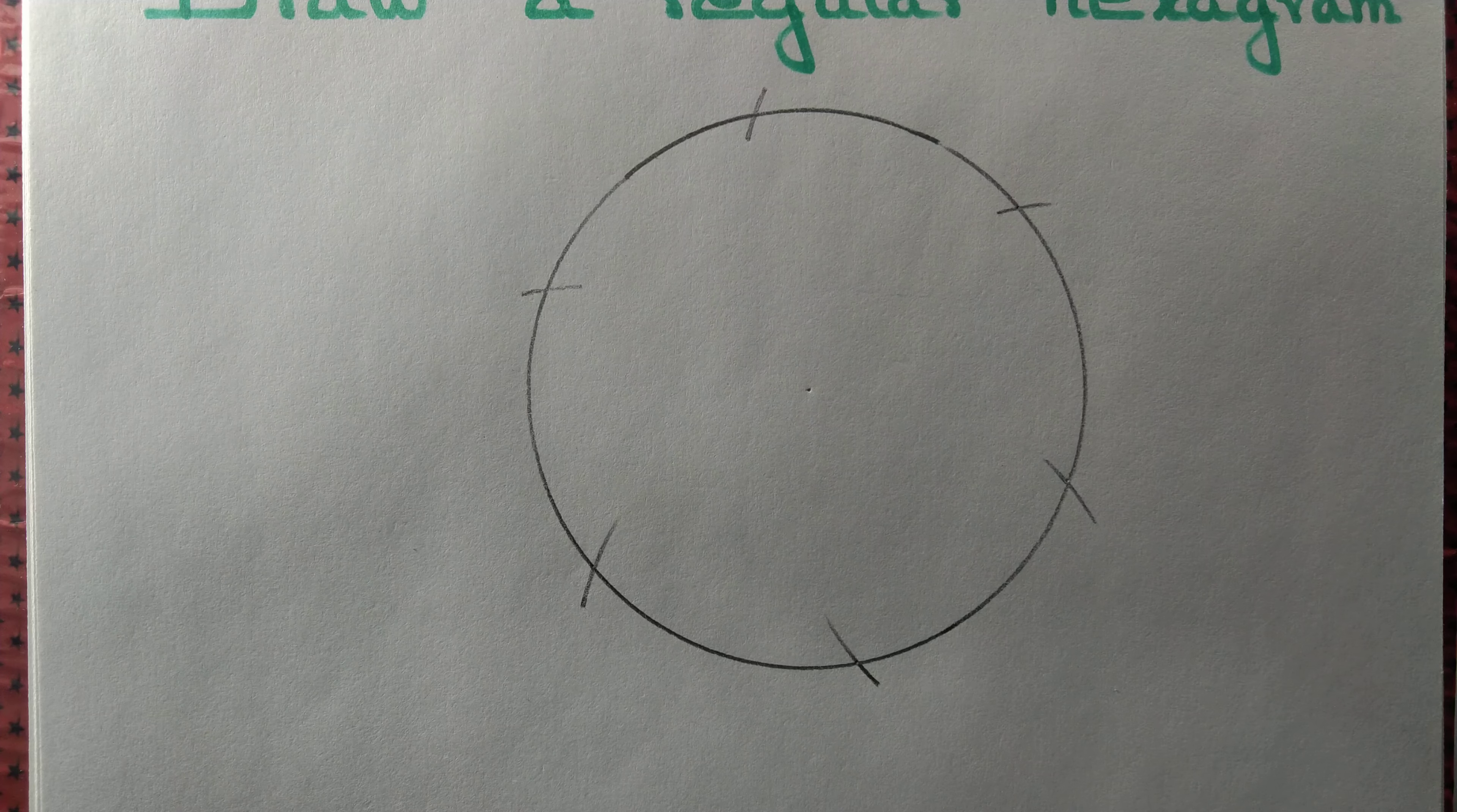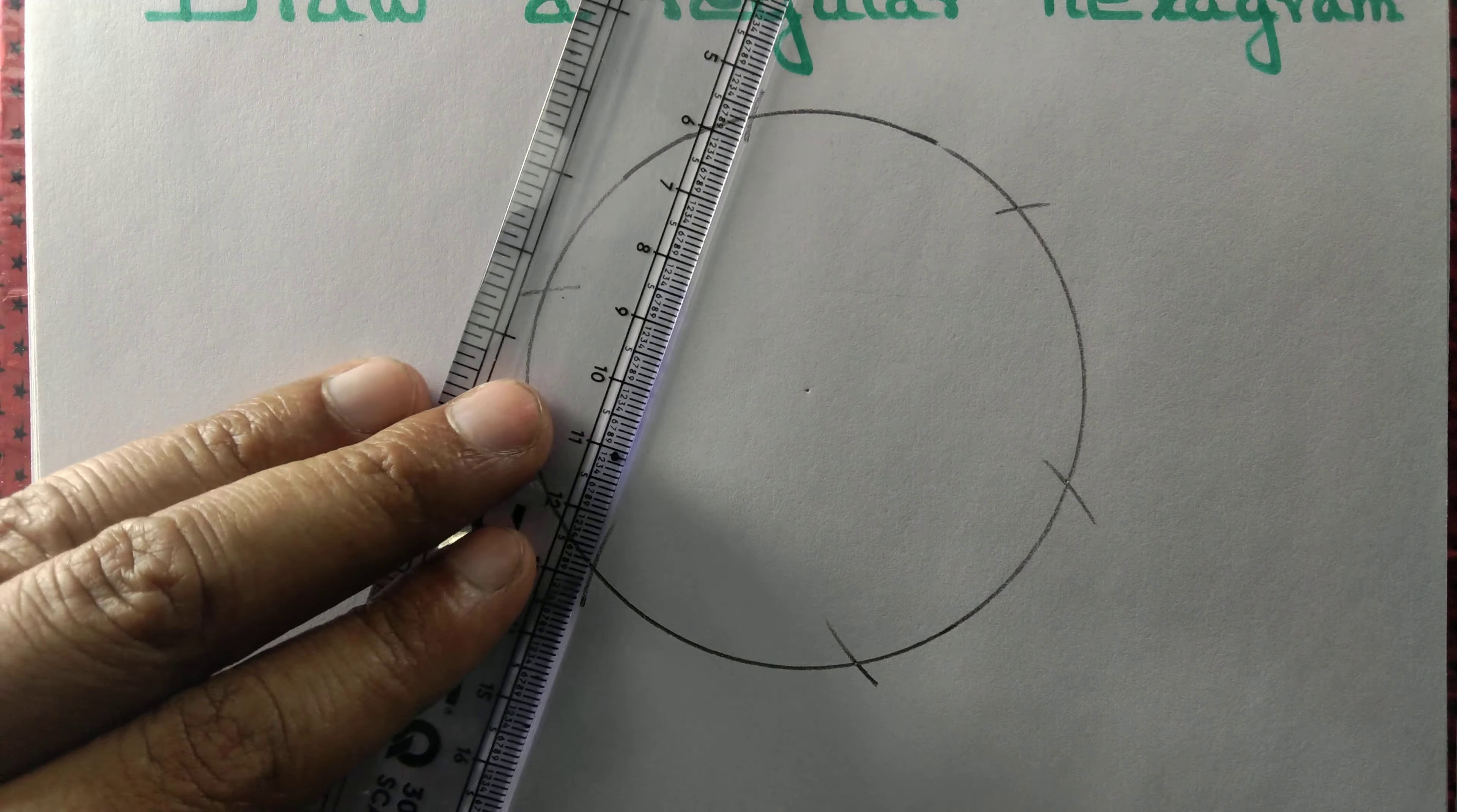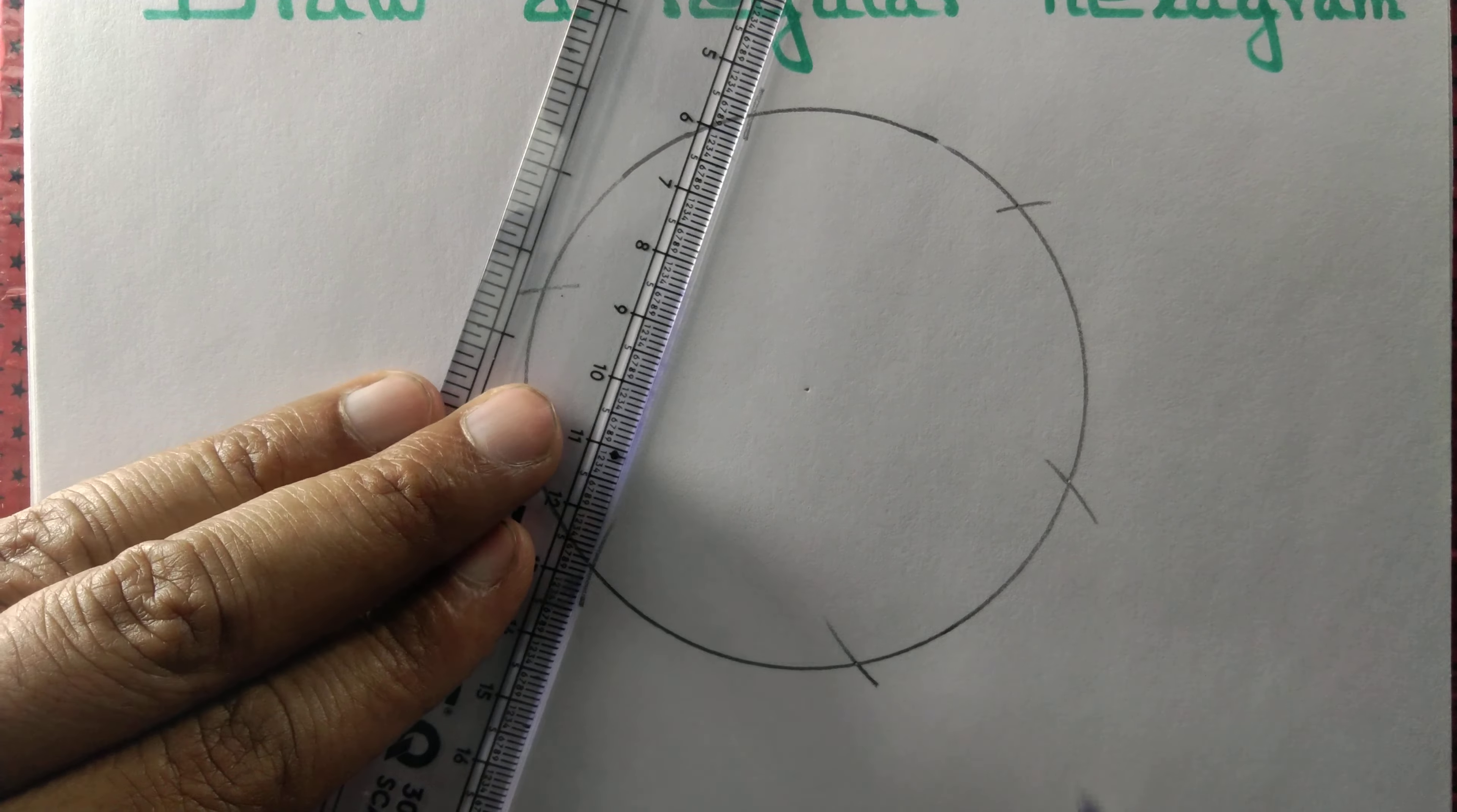Let us join three such intersection points of the arcs and the circle to get an equilateral triangle.